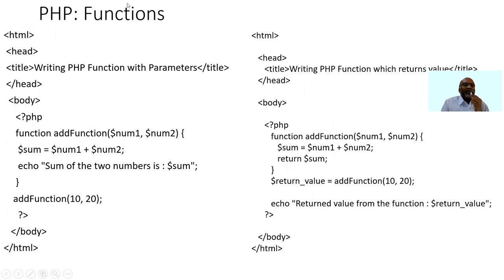Coming to functions, the same principles of C programming language functions apply. You need not specify the return data types or the data types of the parameters. You can define a function within the PHP script tags — for example, an `add` function defined with two arguments `$number1` and `$number2` getting values 10 and 20. The corresponding sum is displayed when the function is invoked. A function can also return a single value; the return value can be stored in a temporary variable and displayed. These are all very similar to C programming language style functions, embedded within the body tag of your PHP.